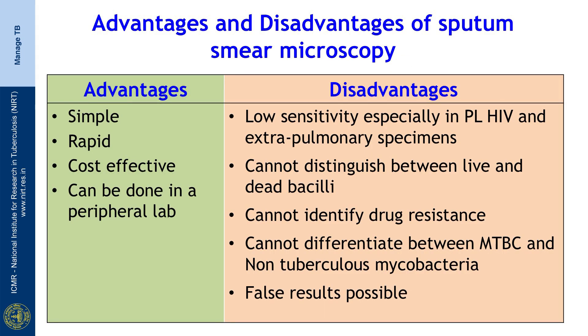We will now see the advantages and disadvantages of sputum smear microscopy. Advantages are that the method is very simple, it offers rapid results, it is very cost effective, and it can be done in a peripheral laboratory. Disadvantages include low sensitivity especially in people living with HIV and in extra-pulmonary specimens. It cannot distinguish between live and dead bacilli, cannot identify drug resistance, cannot differentiate between Mycobacterium tuberculosis complex and non-tuberculosis mycobacteria, and false results are possible. With this we come to the end of the video demonstration on sputum smear microscopy for diagnosis of TB. Thank you.